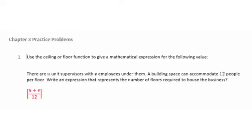Let's start with the expression. You have U unit supervisors and E employees. You're going to add those two together to find the total number of people in the business. Then you know there are 12 people per floor. We're going to divide that number by 12 to figure out how many floors we have.